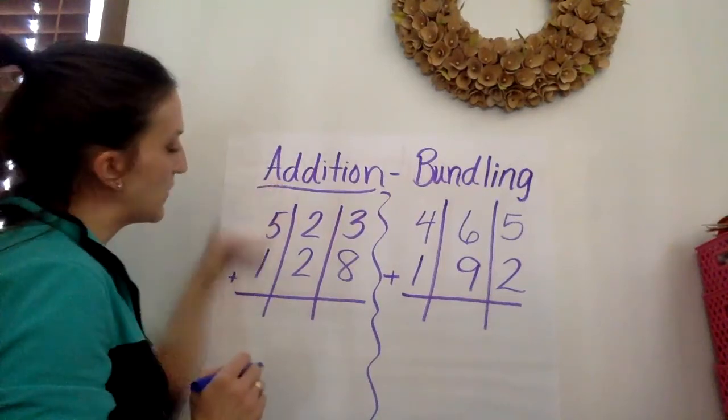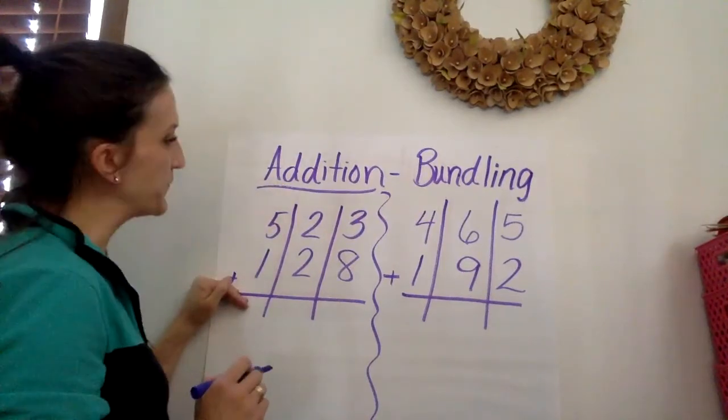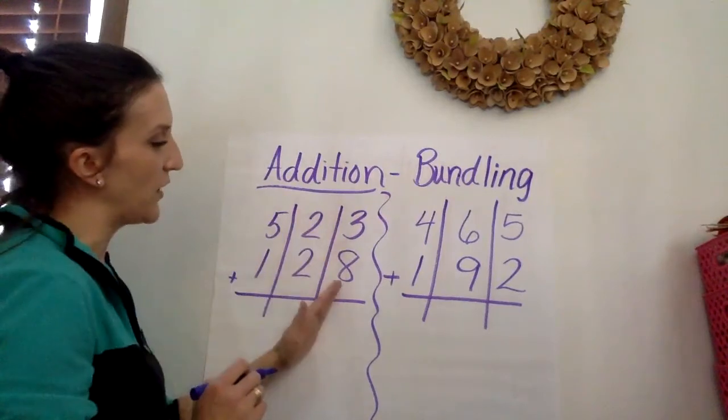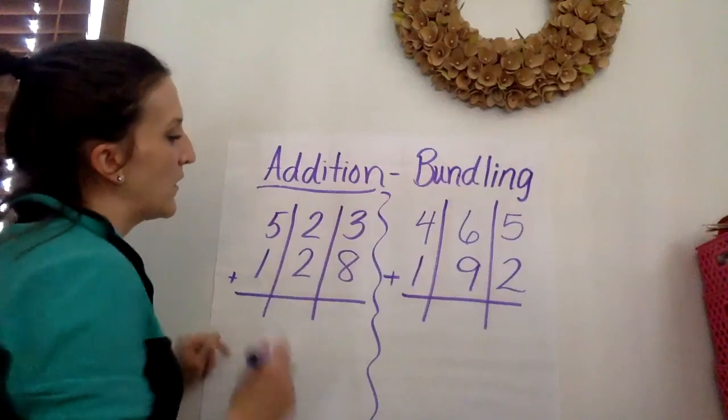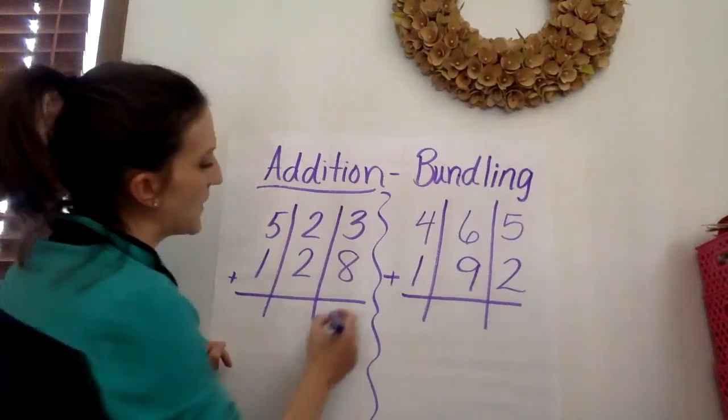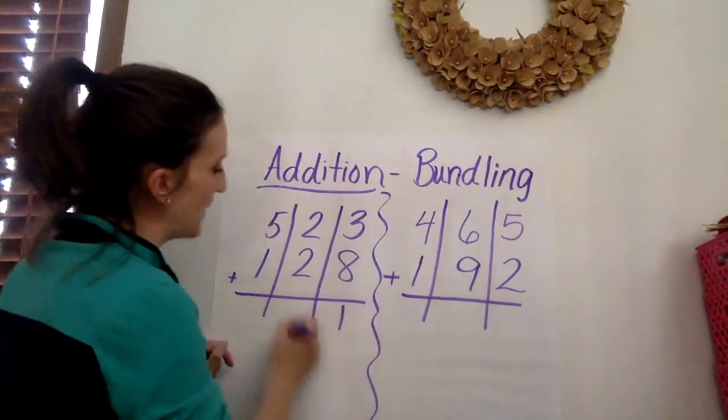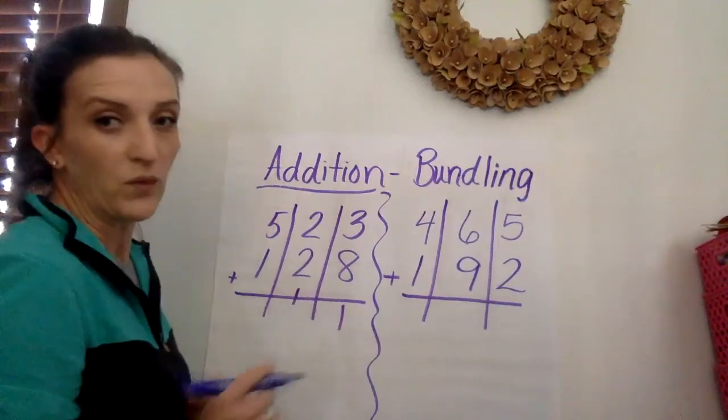So we write our problems vertically and we are starting off in the ones place. We are adding 3 plus 8. 8 count on 3 is 11. One stays, a group of 10 moves next door.